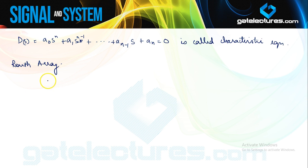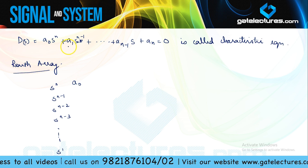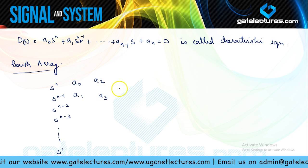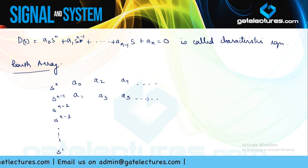How do we form the Routh array? The highest degree S^N is placed first, then in order of decreasing powers down to S^0. You start with the first coefficient A0, then A1, A2, A3, A4, A5, and so on, placing alternate coefficients in the first and second rows.